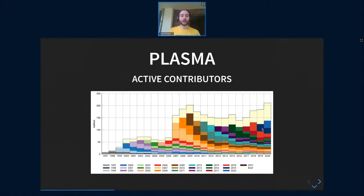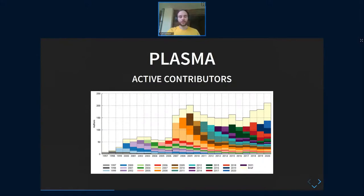For example, for Plasma, these are the statistics. We can see that for 2020, with GitLab and the pandemic, there may be a lot of new contributors compared to other years. Before 2007, the data are a bit off because there were some rewrites and a lot of history was lost — KDE 3 history was lost — and the rewrites of Plasma for KDE 4.